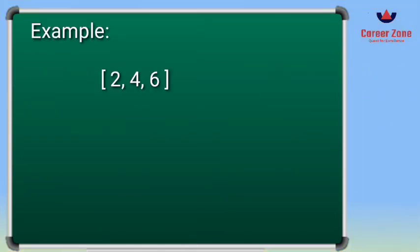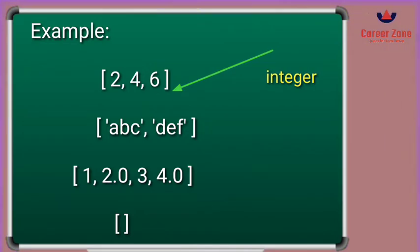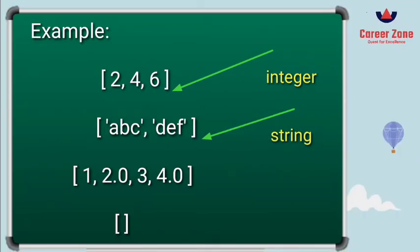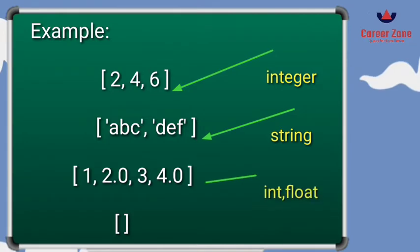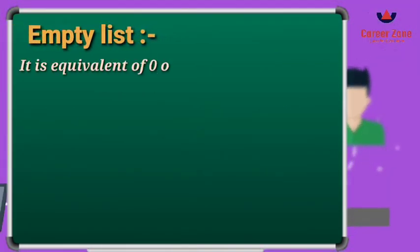Let us see examples of lists. The first list contains values of integer data type. In the second list, I have defined two strings, namely 'abc' and 'def'. In the third one, I have used mixed data type items which include integer and floating point numbers.